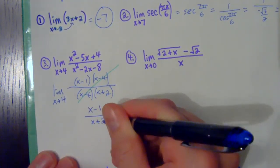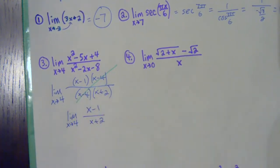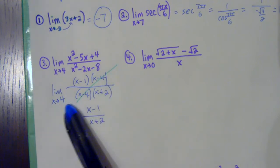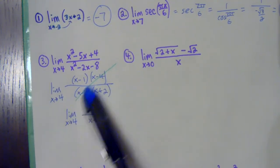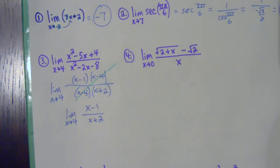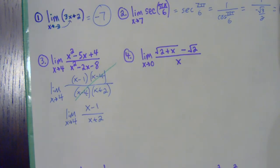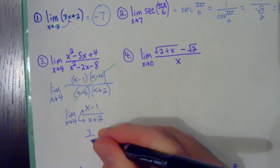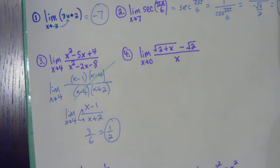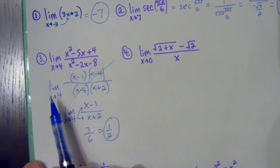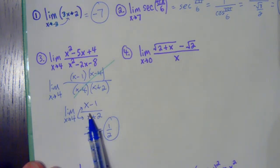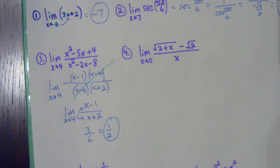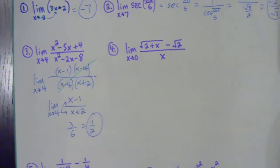After canceling, the algebra removed the problem of getting zero in the denominator when plugging in 4. Now when I plug 4 into (x−1) over (x+2), I get 4 minus 1 equals 3, and 4 plus 2 equals 6, so 3 over 6 equals 1/2 for the final answer. Please write the limit notation every step of the way. Only when you're ready to plug in and it's okay to do so can you drop the limit notation. Writing it correctly will be critical when we get to derivatives.